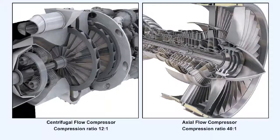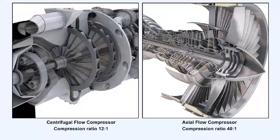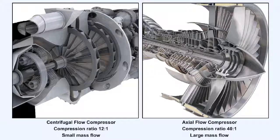Axial flow compressors have several advantages over the centrifugal compressor. For instance, whereas the centrifugal compressor compression ratio is limited to approximately 12 to 1 when the maximum of two stages are used in series, by adding more stages to an axial flow compressor, compression ratios as great as 40 to 1 can be obtained. The term compression ratio refers to the ratio of the pressure at the outlet of a compressor to that at its inlet. A second advantage, almost as important as the first, is that the mass flow achievable through an axial flow compressor is potentially much greater than through a centrifugal compressor.